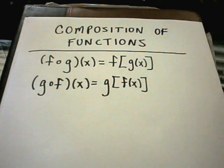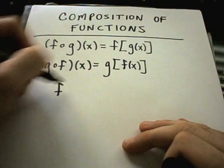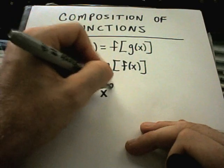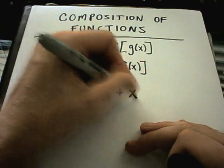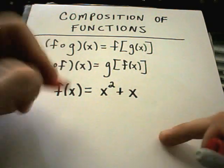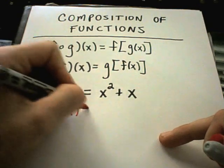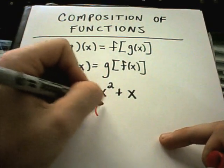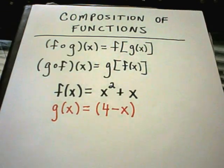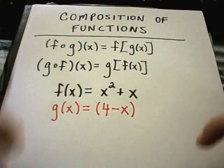Composition confuses people a little bit, so let's take a couple examples. Let f of x equal x squared plus x, and I'll try to color code things here to make them easier to follow. Suppose we have g of x is 4 minus x.